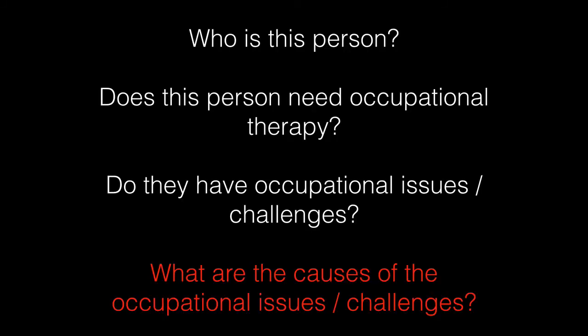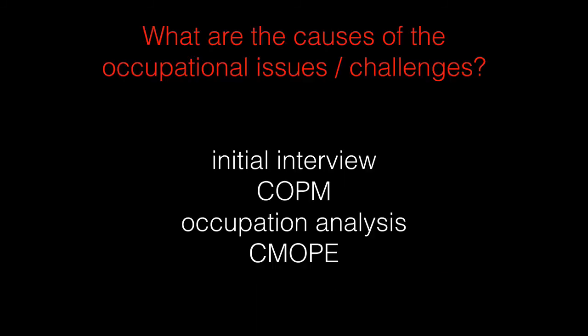The first three questions are largely dealt with by the previous two CPPF stages, but we continue to understand those things in this stage. Stage three is really about what are the causes of the occupational issues and challenges that person is facing. You already have a few tools at your disposal: how to do an initial interview, the COPM, and you've done quite a bit using the CMOP as a structure to think about things, particularly to undertake an occupation analysis. So you could already, without doing any other assessments, start to get a few ideas as to why this person is having these occupational issues and challenges. But there are other things we can do.